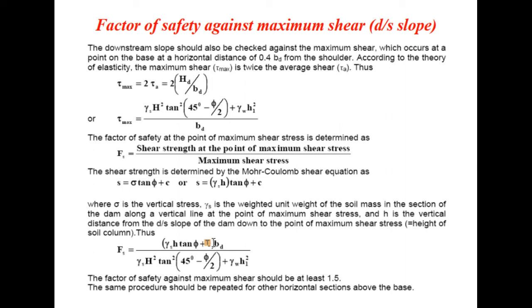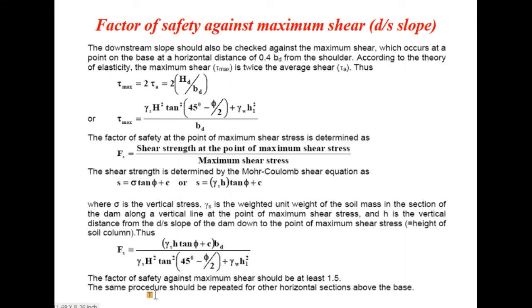The factor of safety against maximum shear FS equals the shear strength times the length of the downstream inclined face, divided by the maximum shear stress tau-max. This gives FS equals (gamma-s times H tan phi plus c) times BD divided by tau-max. The factor of safety against maximum shear should be at least 1.5. The same procedure should be repeated for other horizontal sections above the base.